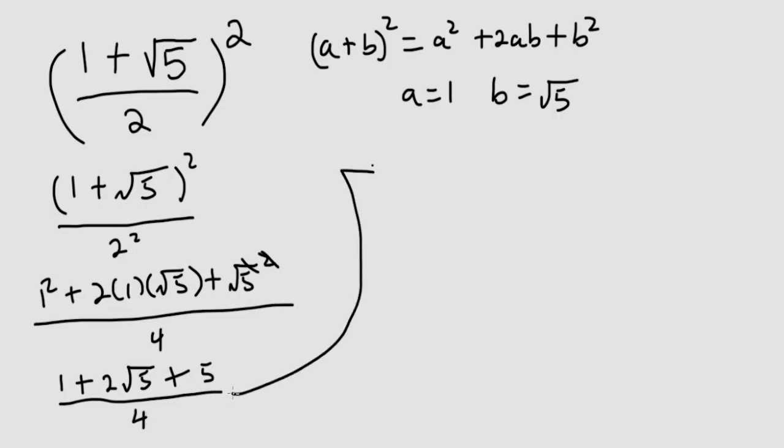Bringing this up here, combining the 5 and 1 we get 6 plus 2 times the square root of 5 over 4.